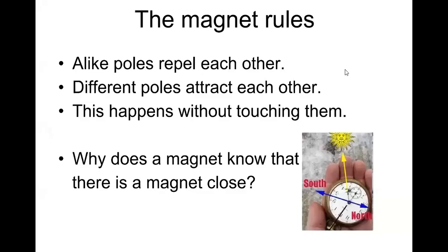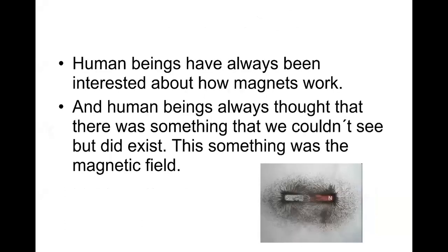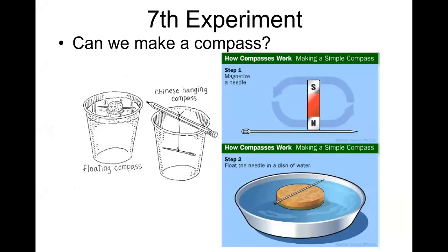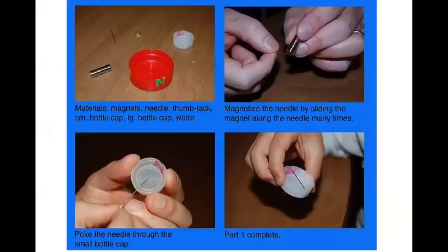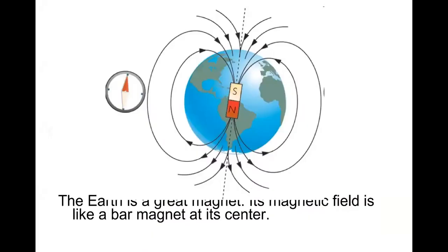We will talk about the magnet rules. Like poles repel each other, different poles attract each other. Why does a magnet know that there is a magnet close? We will discuss that and many fascinating objects and topics in our lesson.